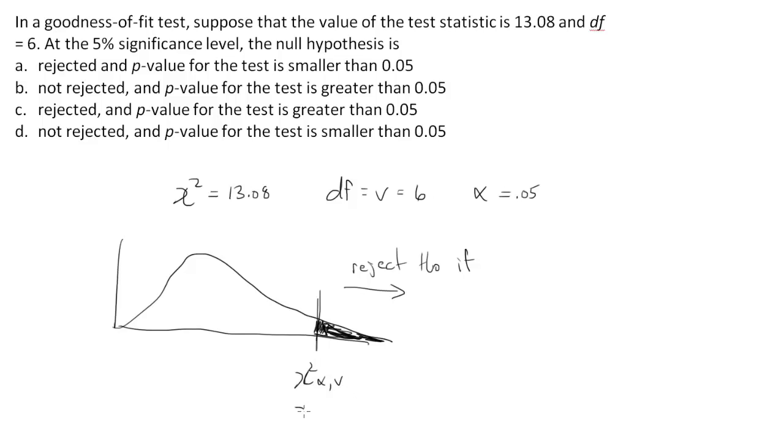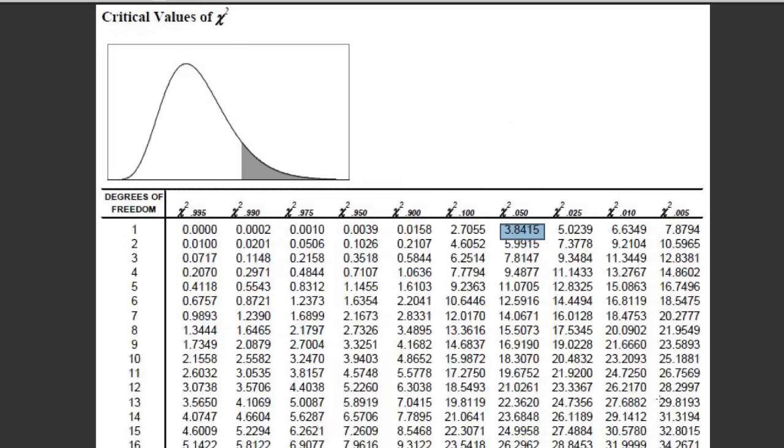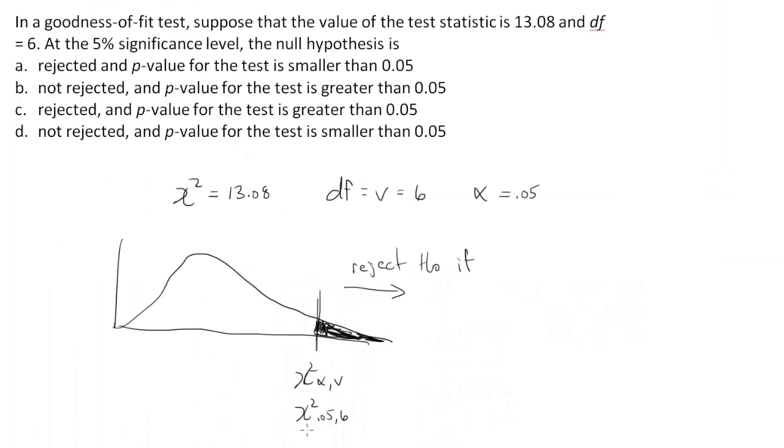This value is going to be dependent upon alpha and the degrees of freedom. So this chi-squared value depends on 0.05 and 6 degrees of freedom. So we can look this up. 0.05 is here, and 6 degrees of freedom, that brings us down to 12.5916. So 12.5916 is this cut-off point.